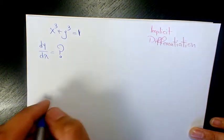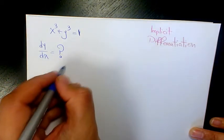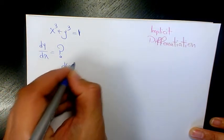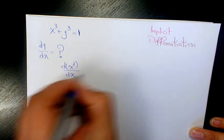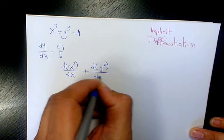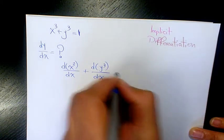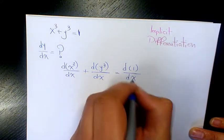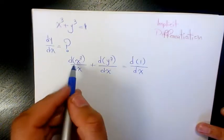What should we do? We should have derivative of x³ over dx plus derivative of y³ with respect to x. That has to be equal to derivative of 1 with respect to x.